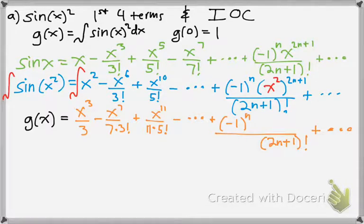So the antiderivative of x² would be (1/3)x³, because you add a power and then divide by that number. Same thing, antiderivative of x⁶ would be x⁷/7, and same thing, times 3 factorial. And then antiderivative of x¹⁰ is x¹¹/(11·5!), since that was from the original.